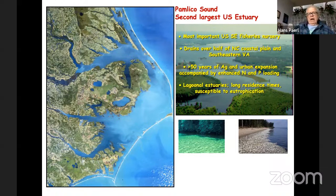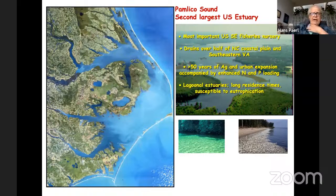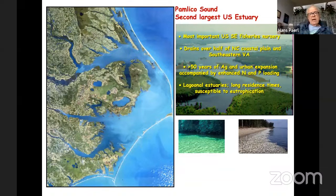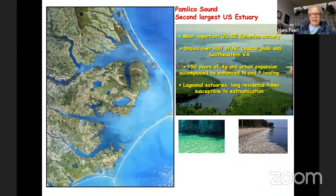I'm going to focus on the second largest estuarine complex in the US: Pamlico Sound. It is a huge system surrounded by the Outer Banks. You can see on this remote sensing image that fragile set of barrier islands, which hold in a lot of water. Water exchange with the coastal ocean is confined to only three narrow inlets, making it essentially a lagoonal system with a long residence time of about a year under normal conditions.